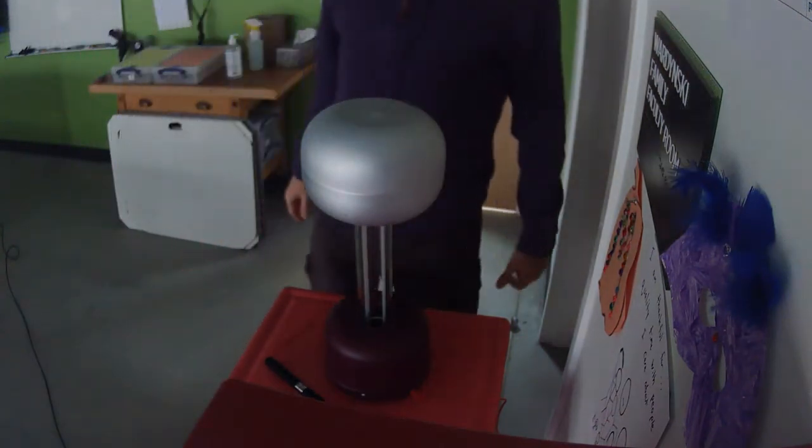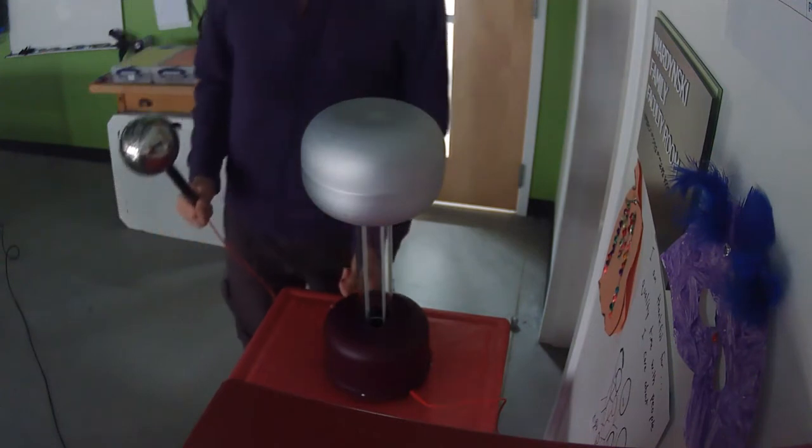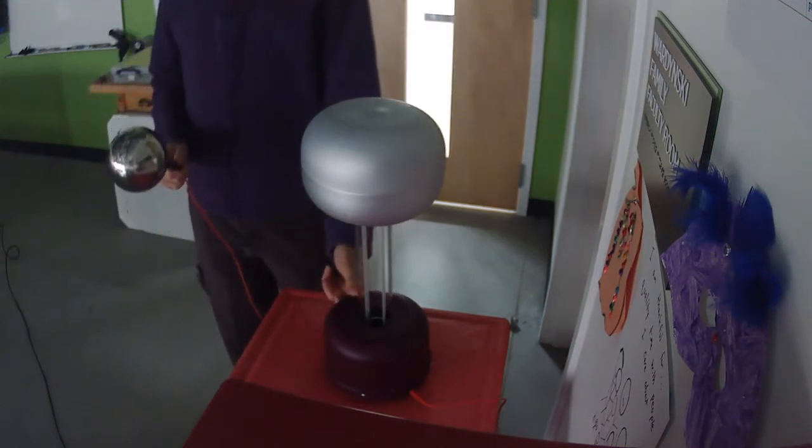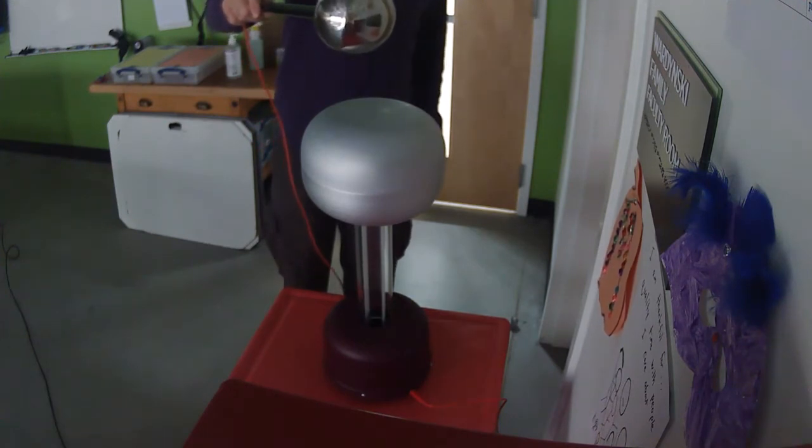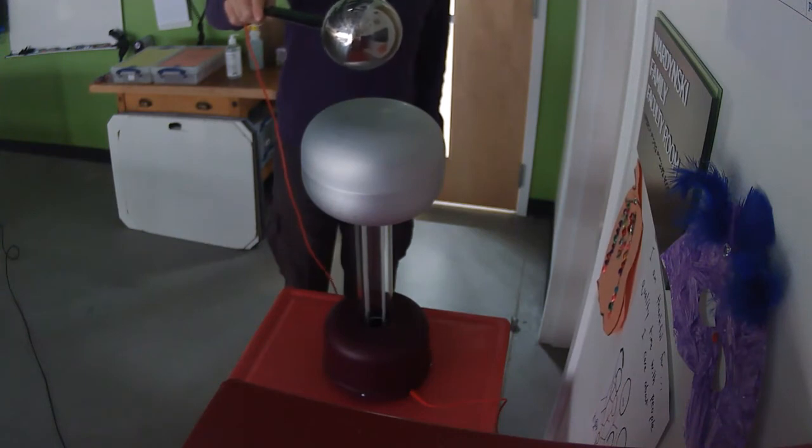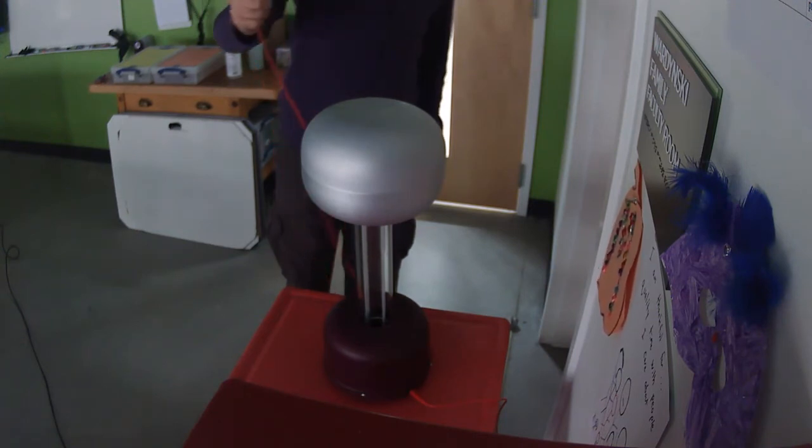This device is called a Van de Graaff generator. Watch what happens when I turn it on. Notice how sparks are traveling from the big globe onto this metal sphere that I'm holding.